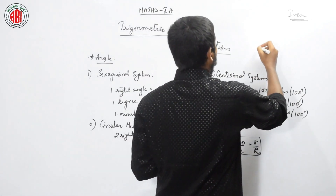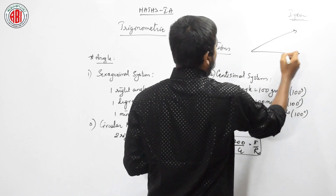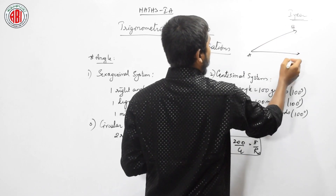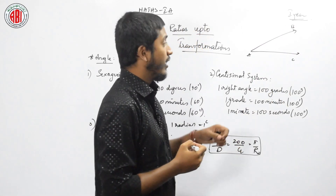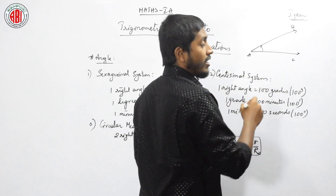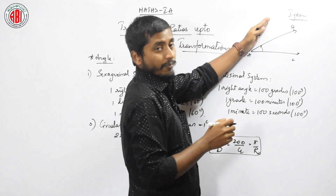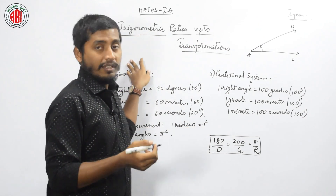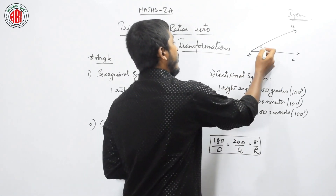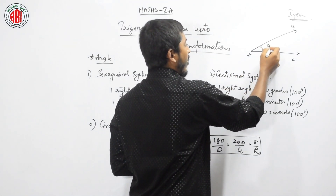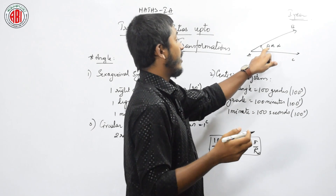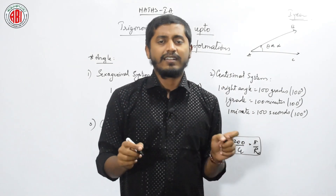An angle is a union of two rays. This is a first ray and this is a second ray where they have a common endpoint. For example, if this is A, and AB is a ray and AC is a ray, the measurement at this particular angle, or the rotation of this ray from this point to this point — once again, an angle is a union of two rays which have a common endpoint. This angle is mostly denoted by theta or alpha or some other parameters; usually we use the term theta. Theta is a standard symbol for an angle.